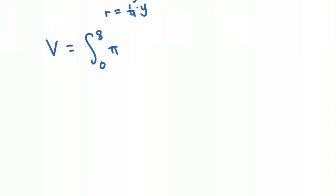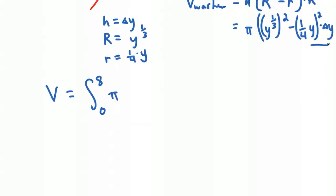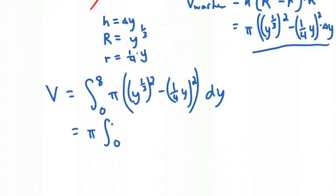So our integral will be the integral from zero to eight of pi times y to the one-third squared minus one-fourth y squared dy. Of course you could take the pi out front. What we get is y to the two-thirds power, y to the one-third times two, two times one-third is just two-thirds, minus one-sixteenth y squared dy.